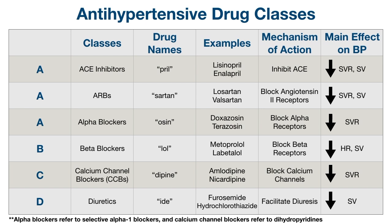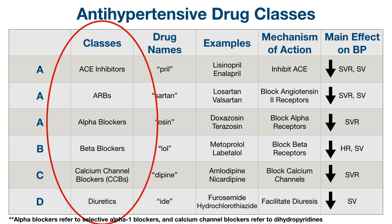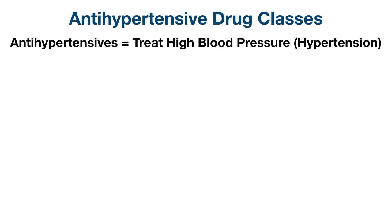Let's first start by giving you a trick to remember the main antihypertensive classes. Antihypertensive medications are used to treat high blood pressure, also known as hypertension. The easy way to remember the main antihypertensive classes is to use ABCD.